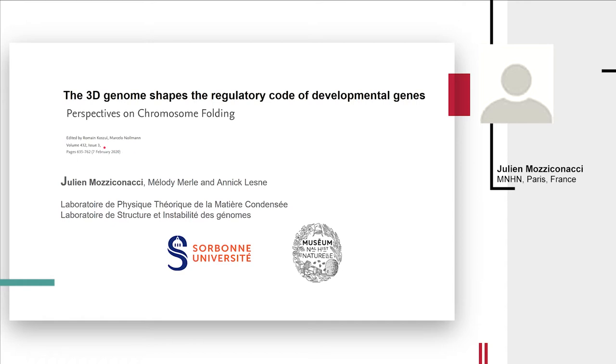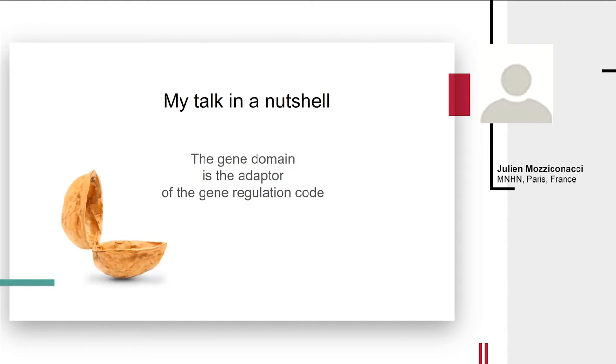The title of this review is The 3D Genome Shapes the Regulatory Code for Developmental Genes. This may sound very fancy but also kind of vague and abstract because it's not really clear what is the 3D genome, what means shape, and what's the regulatory code for developmental gene regulation. So I'm going to be more precise and summarize my talk in one sentence: the gene domain is the adapter of the gene regulation code, which may seem also a bit abstract but quite precise. I'm going to define every single word in this sentence.